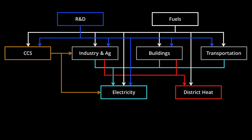This set of R&D levers allows you to explore scenarios that feature R&D advancement above and beyond R&D caused by the two mechanisms noted before. You can specify different rates of additional R&D progress for fuel economy and for capital cost for each technology tracked by the model. For example, in the building sector, you could choose different values for building heating systems, building cooling systems, building lighting systems, and so forth.